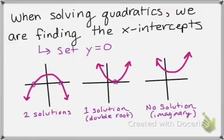First, I think it's important that you understand that when we're solving quadratics, what we're doing is we're finding the x-intercepts. That's what they're asking us to find. And we know that the x-intercept is when y equals zero. So sometimes you'll have two solutions if your parabola crosses your x-axis twice. Sometimes you have one solution, which is when your vertex is on your x-axis.